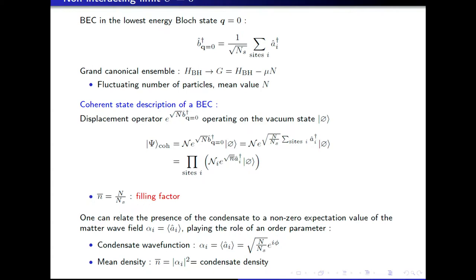In our problem, this quantity alpha plays the role of the order parameter: it is non-zero when there is a superfluid. This alpha is a discrete lattice version of what I called the condensate wave function before, with amplitude equal to the square root of the mean density, and up to some phase phi which is spontaneously picked up — the parameter that breaks the phase rotational symmetry, or gauge symmetry. The modulus squared of alpha gives the mean density, analogous to how the modulus squared of the wave function psi gives the density in the continuum case.